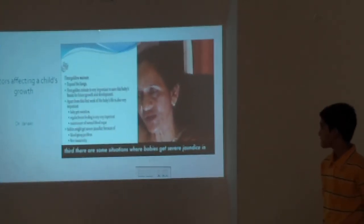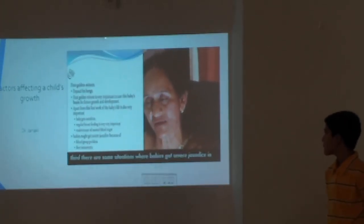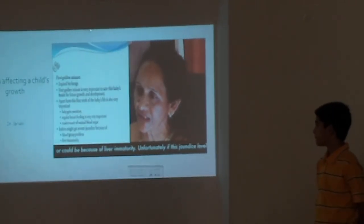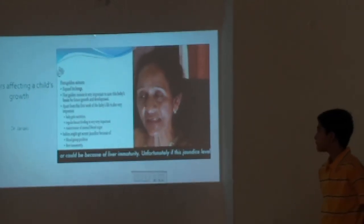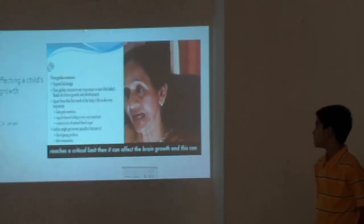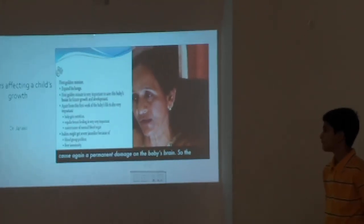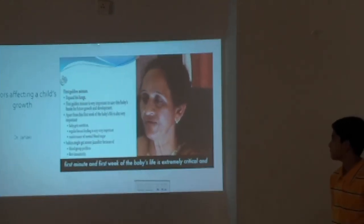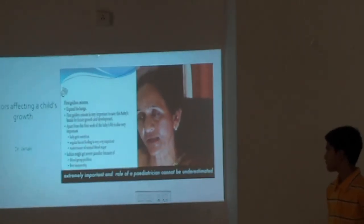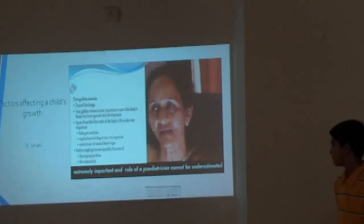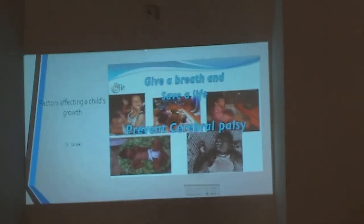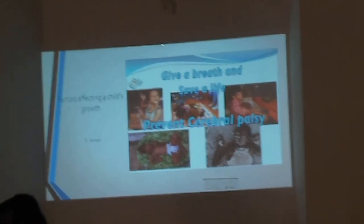There are some situations where babies get severe jaundice in the first week of life. This could be because of blood problems or liver issues. Unfortunately, if jaundice reaches a critical limit, it can affect brain growth and cause permanent damage to the baby's brain. So the first minute and the first week of a baby's life are extremely critical and extremely important. The role of a paediatrician cannot be underestimated at this point. This is what all of us should remember.